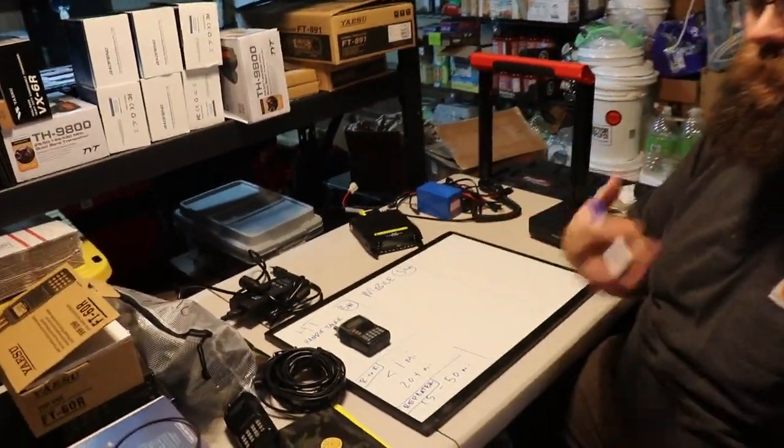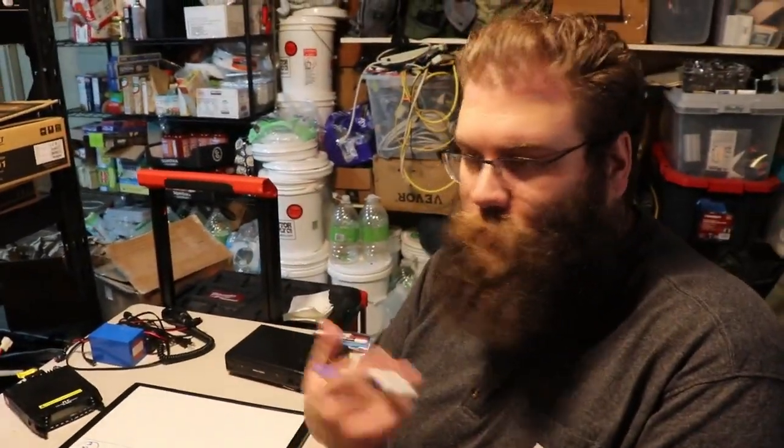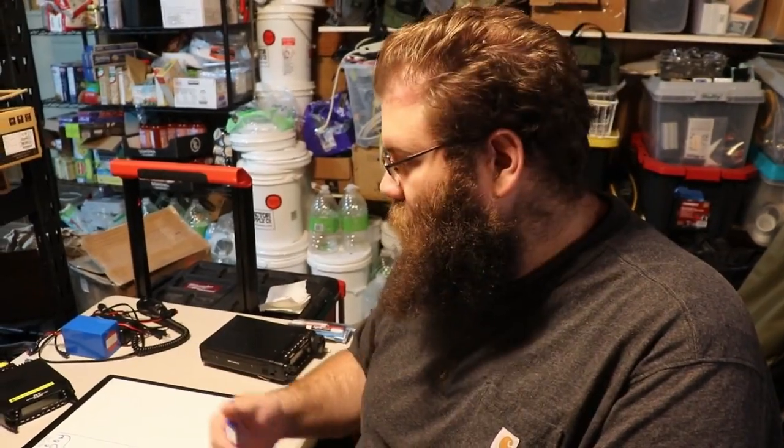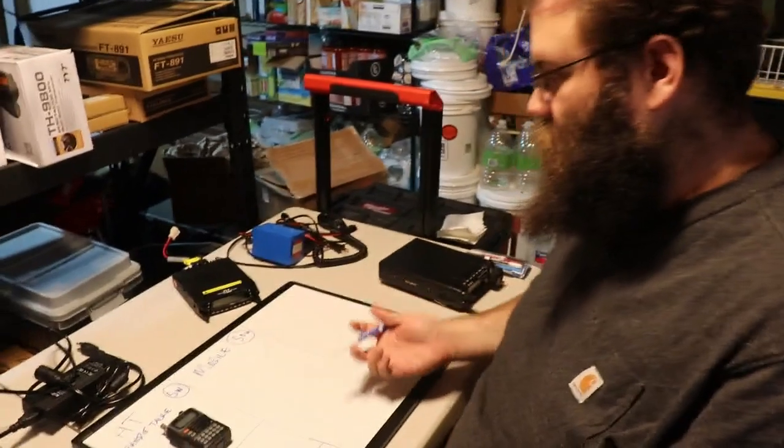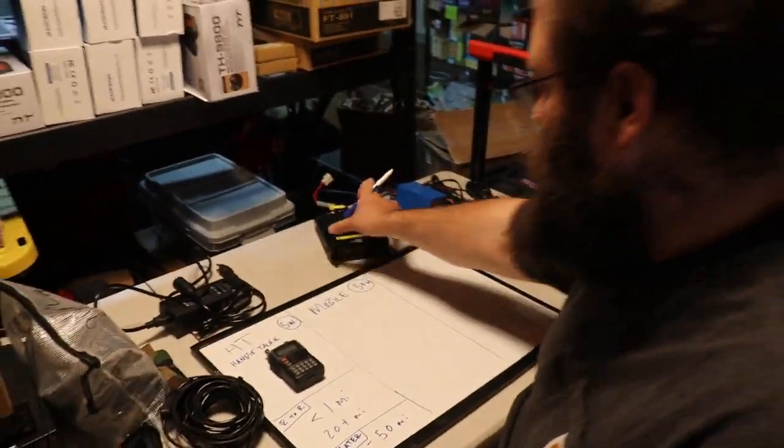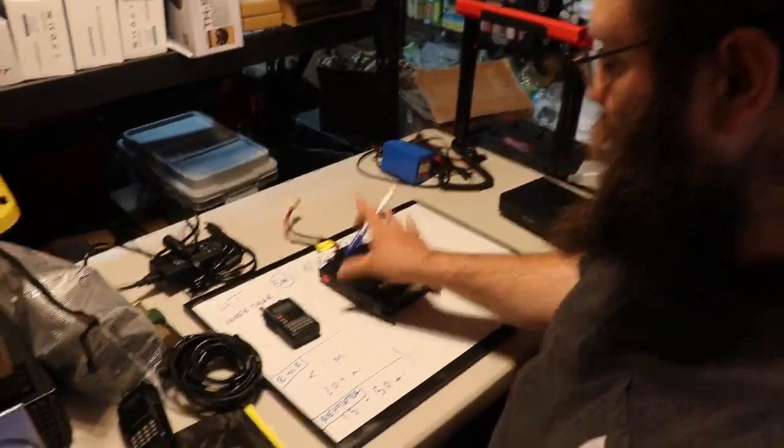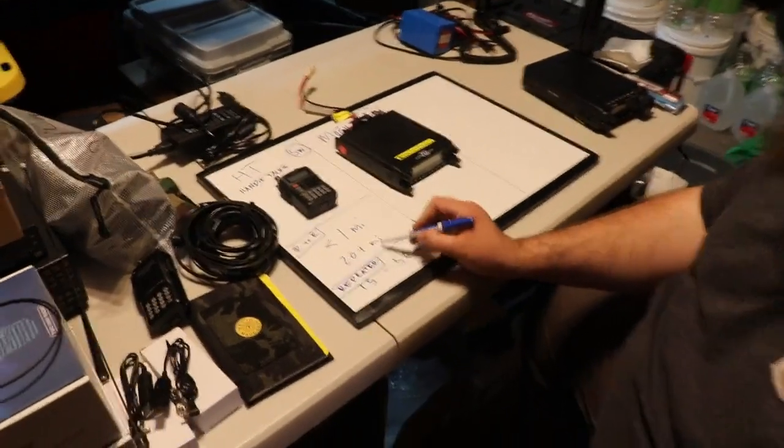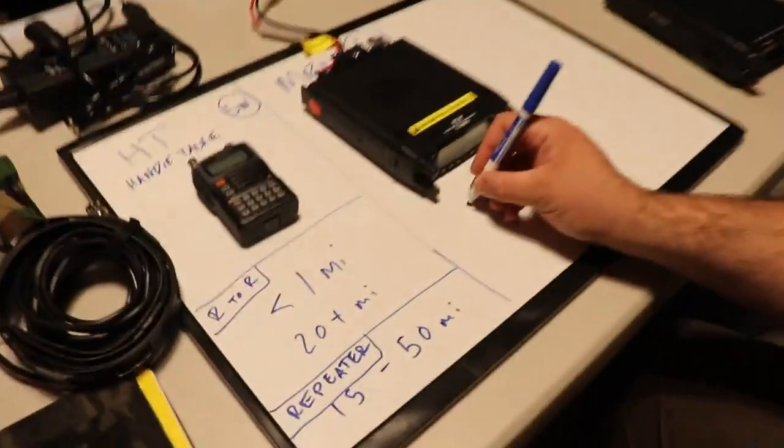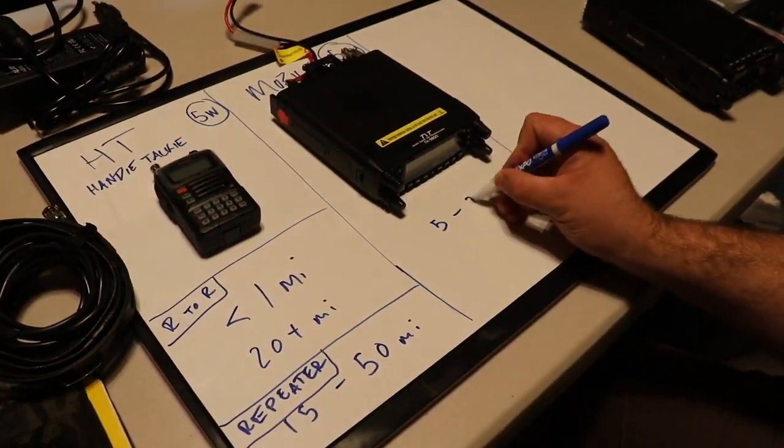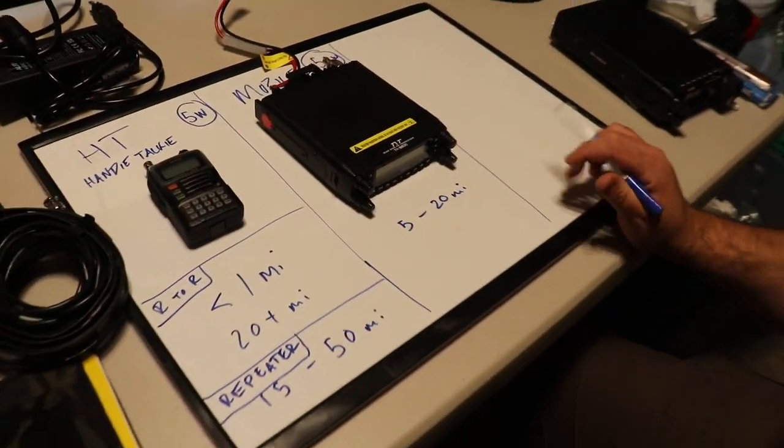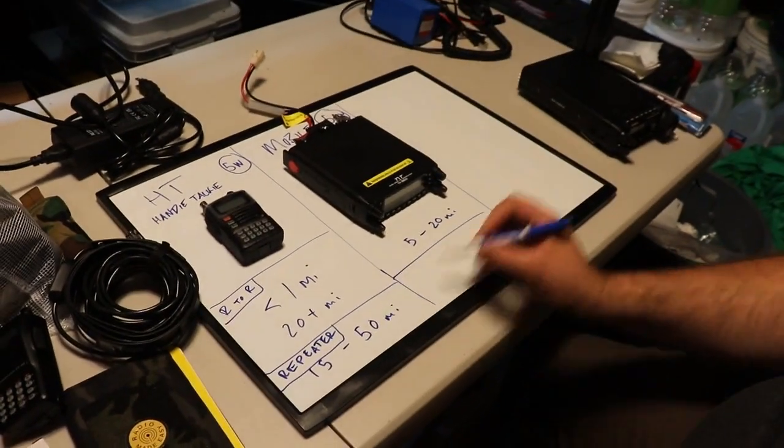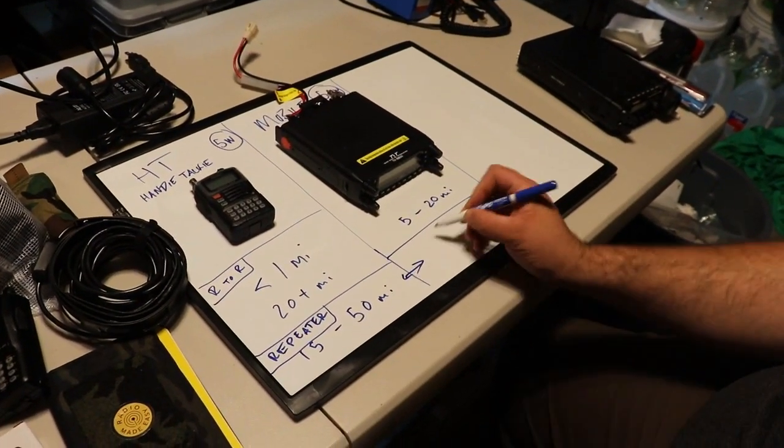What mobile means is it's designed to run off 12 volt power, which 12 volt DC is what your alternator in a vehicle produces. You can also run those off of batteries. Check out the other video for all that jazz. But this radio, you're going to get more like this 20, I would say probably more like five to 20 miles radio to radio because of the power and because of the type of antenna you're going to be using.